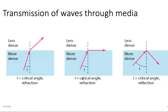When the angle of incidence equals the critical angle, the refraction is at 90 degrees. In other words, if the angle of incidence is such that the angle of refraction becomes exactly 90 degrees, that particular angle of incidence is called the critical angle. This is related to what we learned about Brewster's angle and Brewster's law.